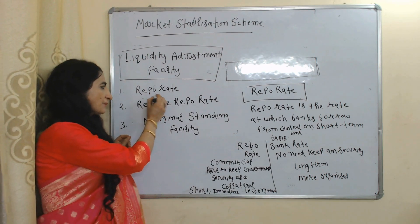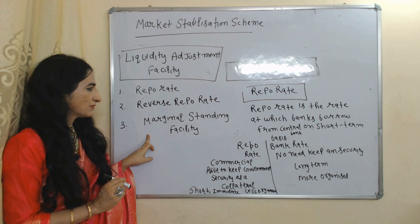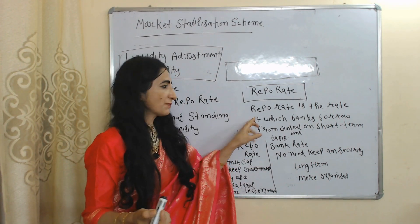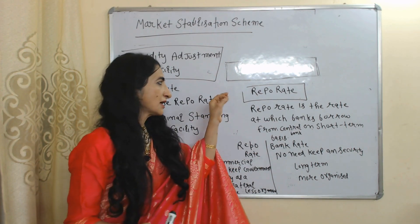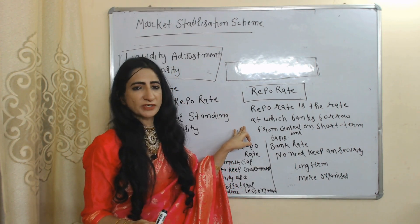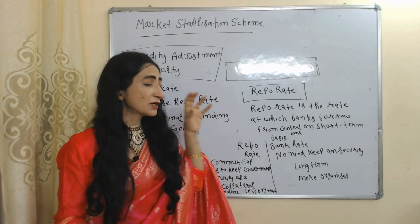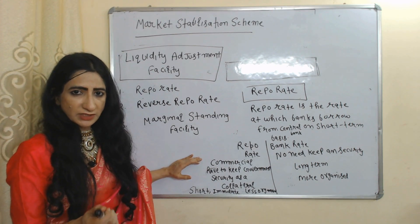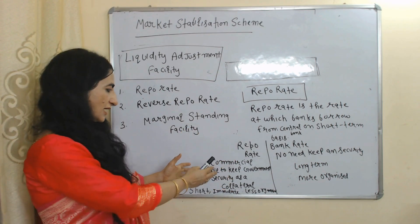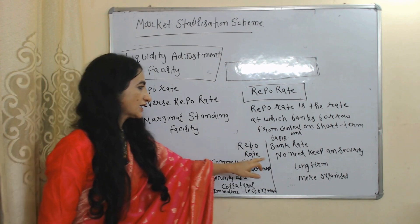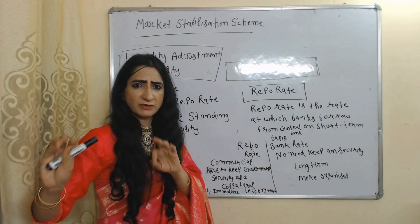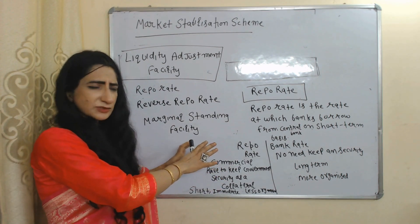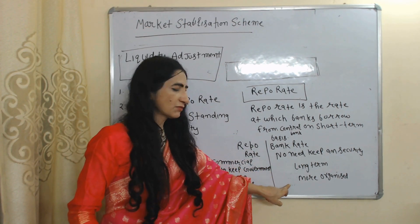The next market stabilization scheme is Liquidity Adjustment Facility (LAF), which has three types: repo rate, reverse repo rate, and Marginal Standing Facility (MSF). Repo rate is the rate at which commercial banks borrow money from the central bank on a short-term basis. Don't confuse repo rate with bank rate — in the case of repo rate, commercial banks have to keep a government security with the central bank as collateral, but in the case of bank rate, no security is required. Repo rate is short-term and fulfills immediate requirements, whereas bank rate is long-term and more organized.